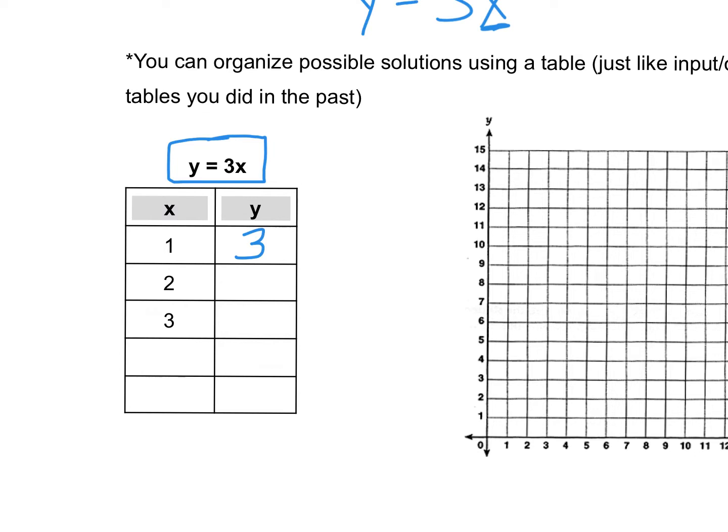If x is 2, we would do 3 times 2, and y is equal to 6. If x is 3, 3 times 3 is 9. So y is 9. We could do some more. Let's jump to 10. If x is 10, 3 times 10 would be 30. And you could just continue on picking any number that you wanted to for x.